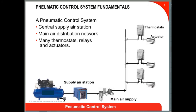A pneumatic control system consists of a main supply air station, a reliable air distribution system, and a network of thermostats, relays, and actuators controlling various pieces of HVAC equipment. These thermostats can control a variety of unitary equipment as well as zone air handlers. It all starts with a proper source of supply air to provide the energy to make it all work.